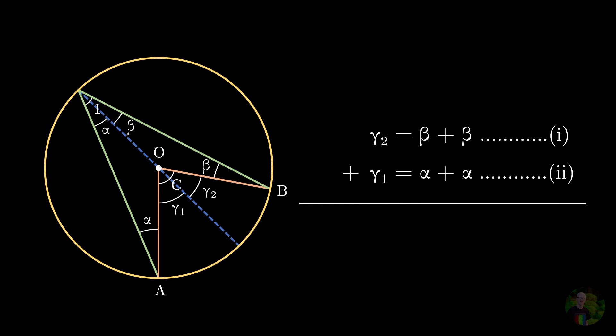Now if we add both of those equations, we will get that gamma 1 plus gamma 2 is equals to alpha plus beta plus alpha plus beta. And if we take a look at this part of the figure, we see that gamma 1 and gamma 2 sum up to become the central angle. So we will replace the gamma 1 plus gamma 2 with C as the central angle.